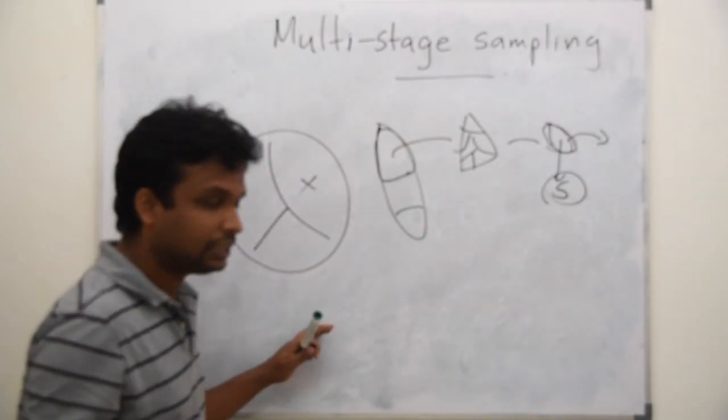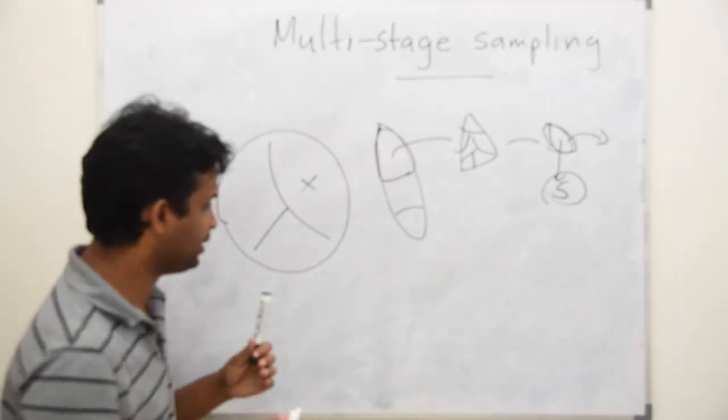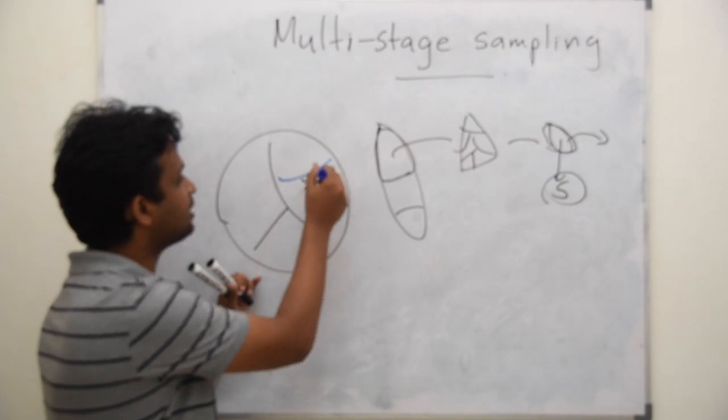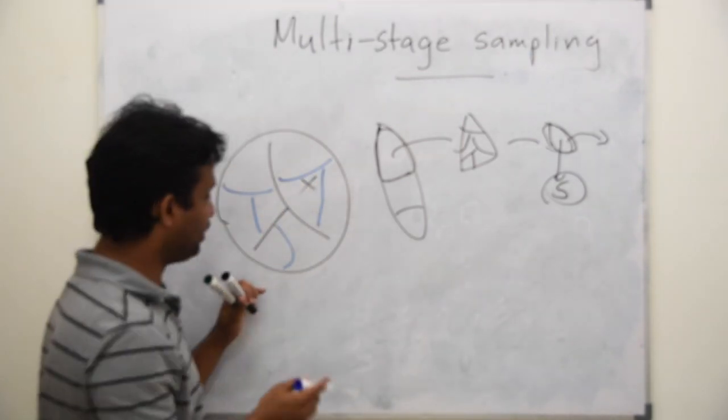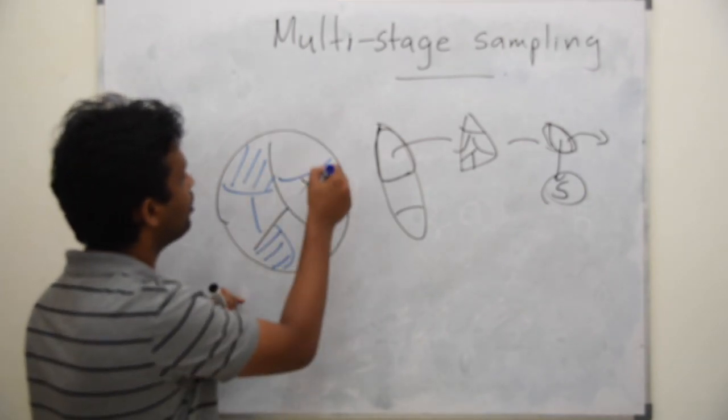Or else, you can modify this multi-stage sampling in many other ways. Assume that there are three clusters. Each cluster has separate parts. You can pick one from here, one from here, one from here. So you will be getting three different components.